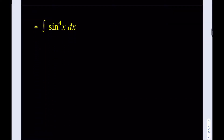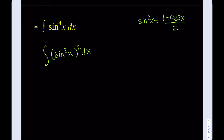Let's take a look at our third problem: the integral of sine to the fourth power. Since we have an even power, we use the formula sine squared x equals (1 minus cosine 2x) divided by 2. Since I have sine to the fourth, I write it as sine squared squared. Then I replace sine squared with (1 minus cosine 2x) divided by 2, and the whole expression is squared, dx.